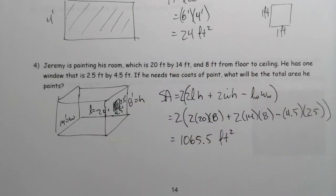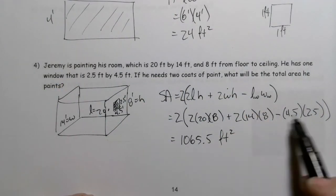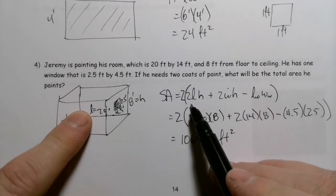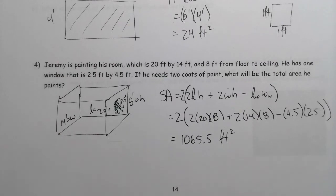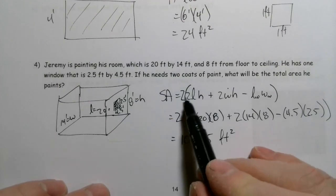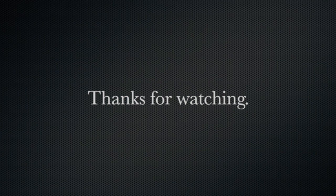Those kinds of questions can get more complicated, but you want to break it down piece by piece. Look at one wall, double it if there are two of them, then subtract the window, and multiply by the number of coats. Build your equation a little bit at a time, then do the substitution to evaluate it.